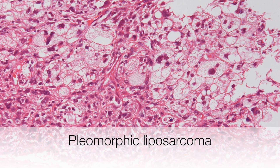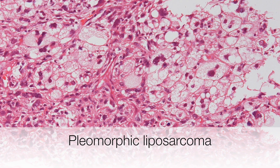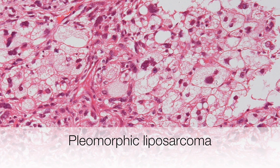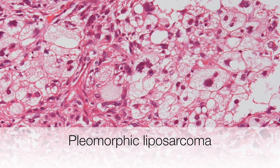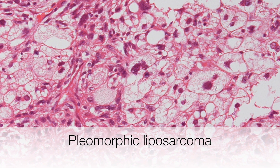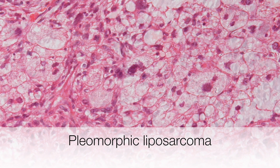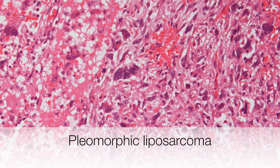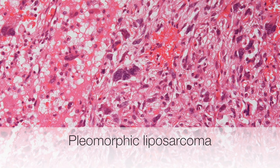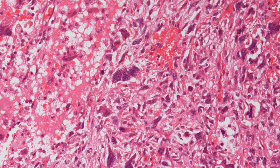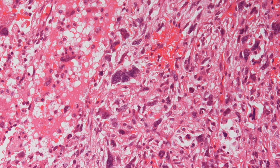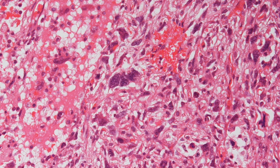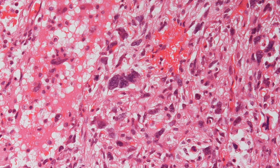This is another tumour of fat but this is a pleomorphic liposarcoma, a malignant tumour. It is called a pleomorphic liposarcoma because the cells and nuclei show extreme variation in size and shape.